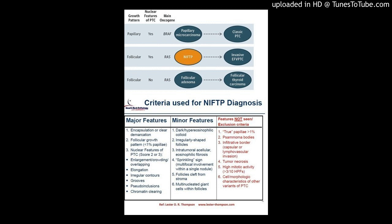Nuclear features of papillary thyroid carcinoma: enlargement, crowding, overlapping, elongation, irregular contours, grooves, pseudo-inclusions, chromatin clearing. Nuclear score should be 2 or 3. Minor features include: dark colloid, irregularly shaped follicles, sprinkling sign, and follicles cleft from stroma.